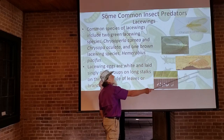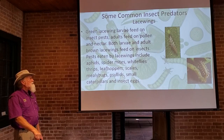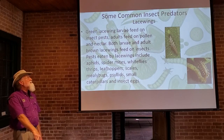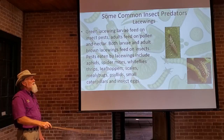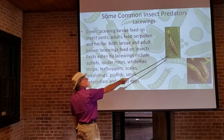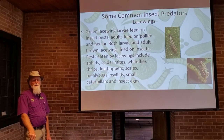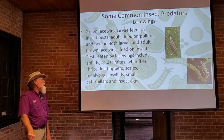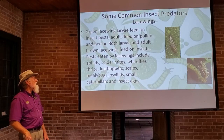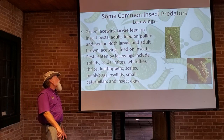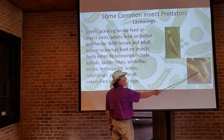With green lacewings, it's only the larvae that feed on insect pests — the adults feed on pollen and nectar, so they actually do some pollination. The brown lacewings have both adults and larvae feeding on insect pests. They feed on aphids, spider mites, whiteflies, thrips, leafhoppers, scale insects, mealy bugs, psyllids, small caterpillars, and insect eggs.